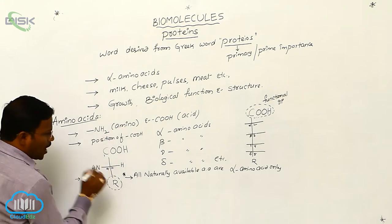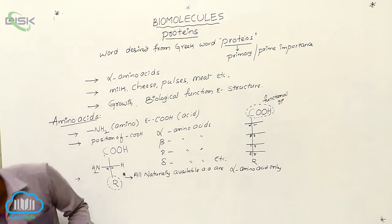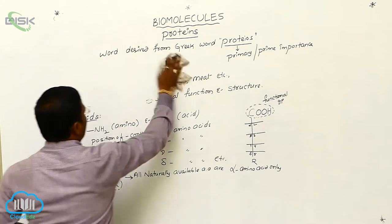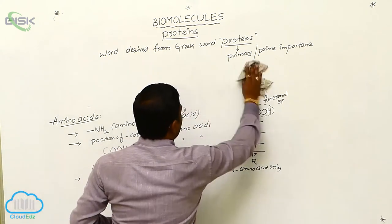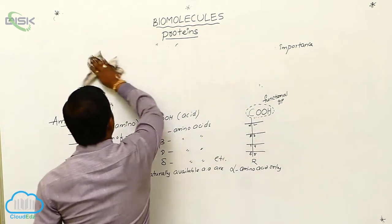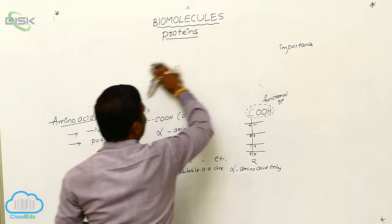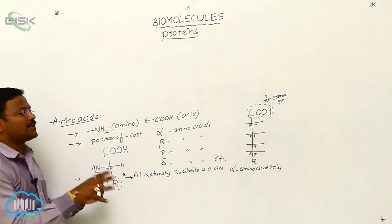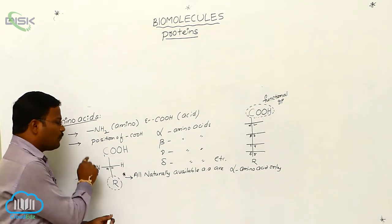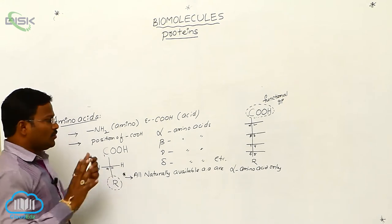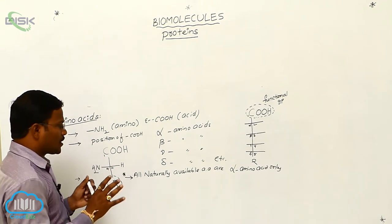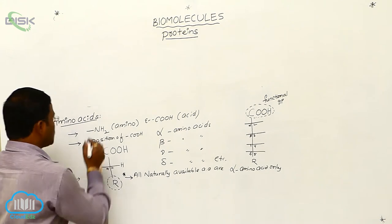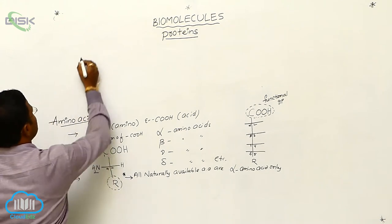What is R in the general representation of amino acids? By substituting the R group with different groups, it is possible to produce 20 different types of alpha amino acids. These alpha amino acids are called naturally available alpha amino acids.